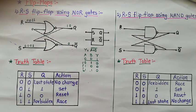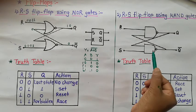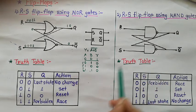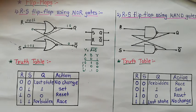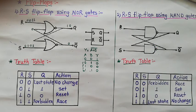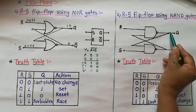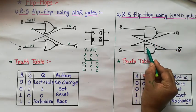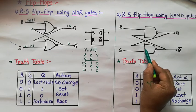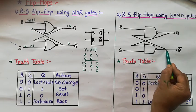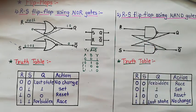The same RS flip-flop is also constructed using NAND gates. The second diagram shows the RS flip-flop by using NAND gate. Here also the two NAND gates are connected in cross-coupling: the output of the first NAND gate is given as input to the lower NAND gate, and the output of the lower NAND gate is given as input to the upper NAND gate.